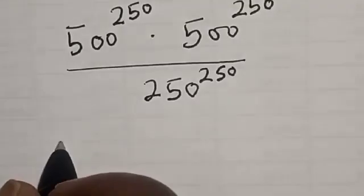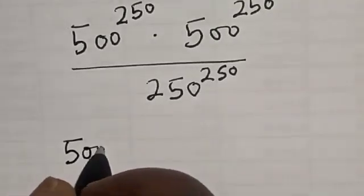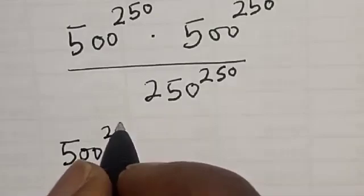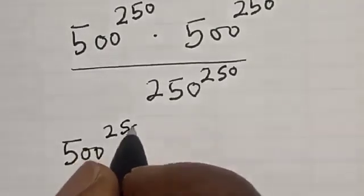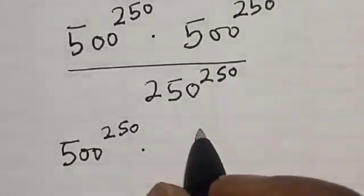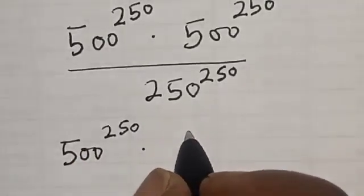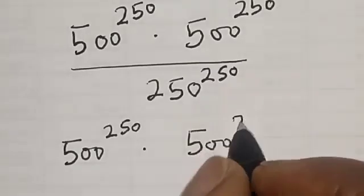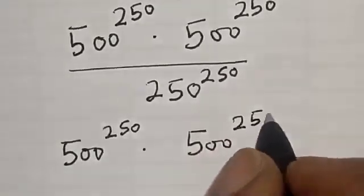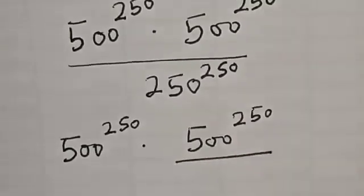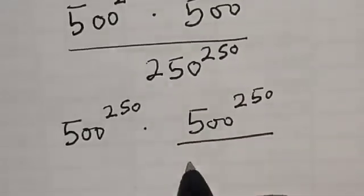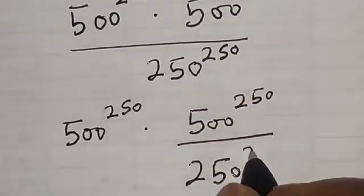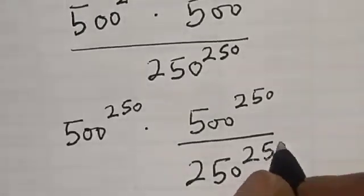Then we have 500 raised to power 250, multiplied by 500 raised to power 250, divided by 250 raised to power 250.